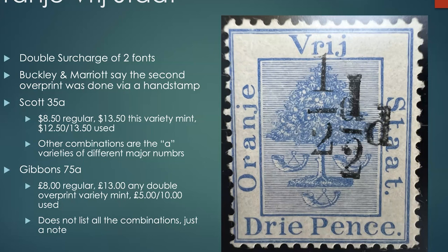This double overprint is interesting — apparently it was done because the first overprint didn't print clearly. You can see the top of the '2' is missing, that's probably the original overprint. This was not done by running it through the press again — the second overprint was done by hand with a single stamp, one by one.